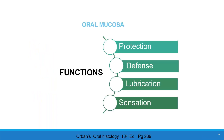Functions of oral mucosa. The first function is protection. Oral mucosa protects the deeper tissue from mechanical forces and surface abrasion from the hard palate and mastication. Defense: oral mucosa prevents the entry of microorganisms. It is impermeable to bacterial toxins and secretes antibodies and mediates humoral and cell-mediated immunity.